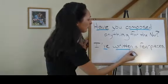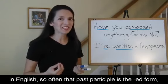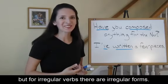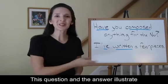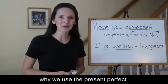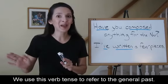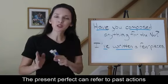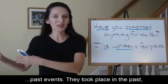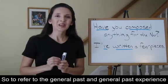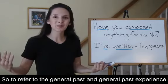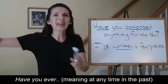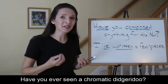Have and the past participle. As you know, there are lots of irregular verbs in English, so often that past participle is the ED form, but for irregular verbs, there are irregular forms. This question and answer illustrate one of the most common reasons why we use the present perfect. We use this verb tense to refer to the general past. Did he compose something? Yes. When? I don't know. The present perfect can refer to past actions, past events that took place in the past, but were not naming a specific point in time. So to refer to the general past and general past experience, we use the present perfect. Very often these questions use ever. Have you ever, meaning at any time in the past, done something? Have you ever seen a chromatic didgeridoo?